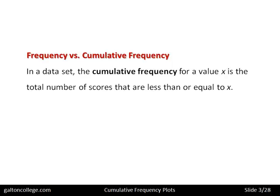Frequency versus cumulative frequency: in a data set, the cumulative frequency for a value X is the total number of scores that are less than or equal to X. It's not looking at the frequency of X alone — it's the total count of values equal to X plus all values less than X. That's what we mean by cumulative: it's adding up, counting all the way up to and including that value.